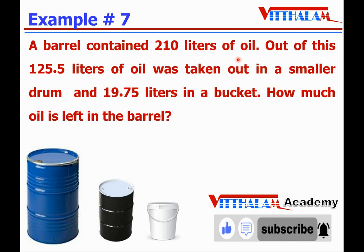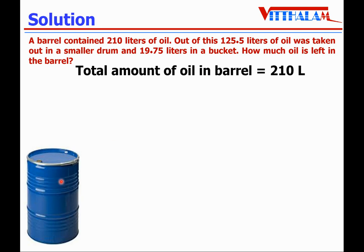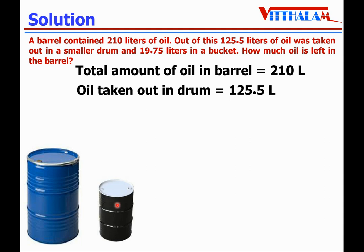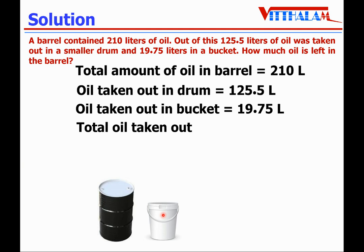Now let's understand some word problems. A barrel contained 210 liters of oil. Out of this, 125.5 liters of oil was taken out in a smaller drum and 19.75 liters was taken out in a bucket. How much oil is left in the barrel? Total oil in the barrel is 210 liters. Oil taken in the smaller drum is 125.5 liters, and oil taken in the bucket is 19.75 liters. We will first calculate the total oil taken out — that is 125.5 plus 19.75.